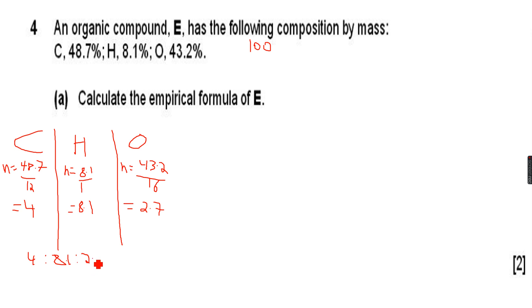So now 4 is to 8.1 is to 2.7. If you divide all of these by 2.7, when we divide all of these by 2.7 we get 1.5 is to 3 is to 1.